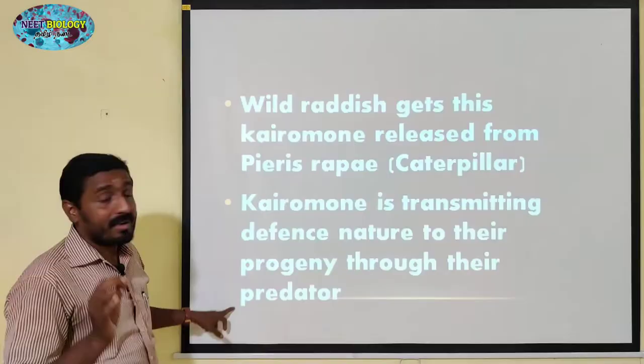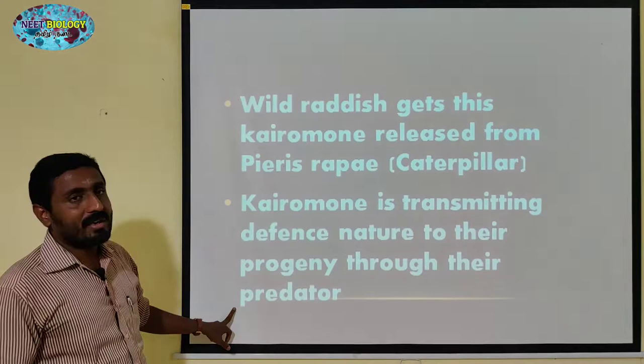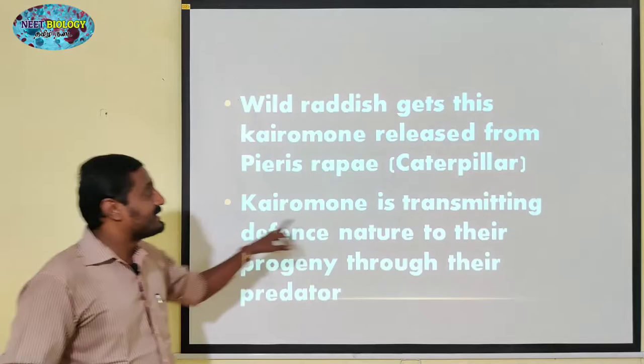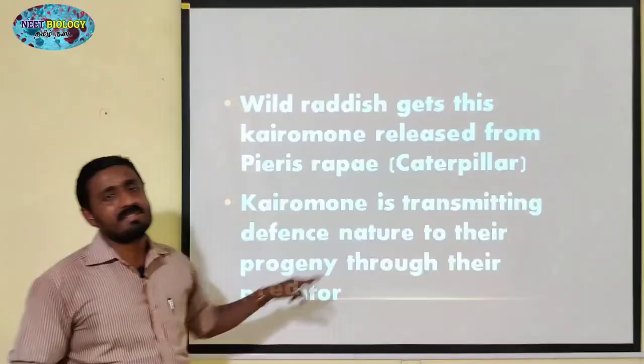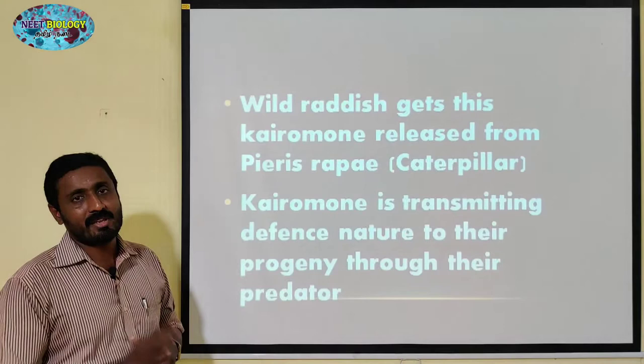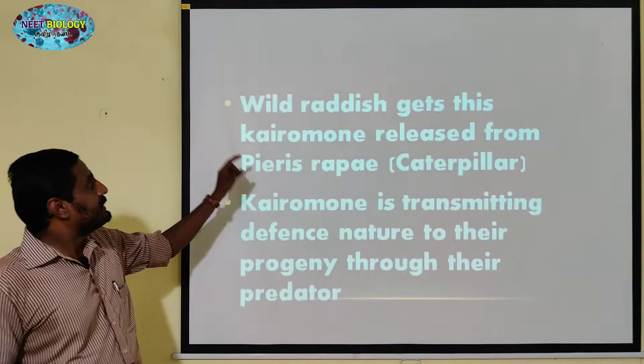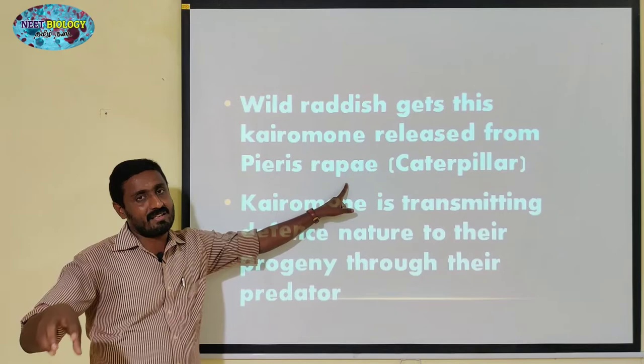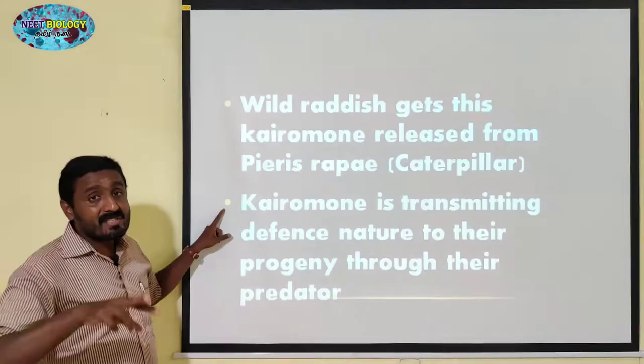The predator transmits different nature and conduct to its progeny — inheriting and transmitting traits. So in Pieris rapae at the caterpillar stage, the wild radish defense mechanism passes to the other generation. This is a co-evolution type.